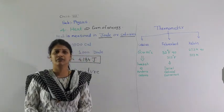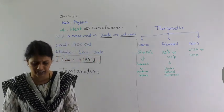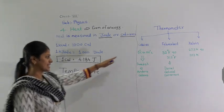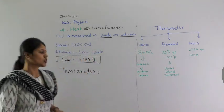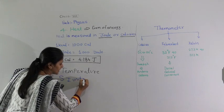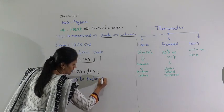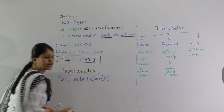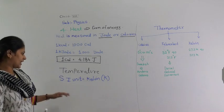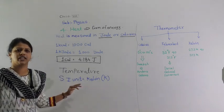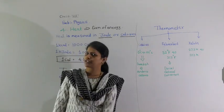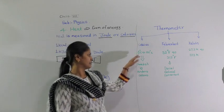What will be the SI unit of temperature? Temperature is measured with Celsius, Fahrenheit, and Kelvin. The standard SI unit of temperature is Kelvin, and it is denoted by the capital letter K. These are the three types of scales of the thermometer.